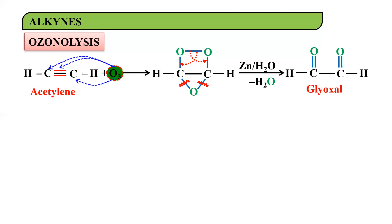So if you do ozonolysis of an alkene you get aldehydes, ketones, or a mixture — but if you do ozonolysis of an alkyne, you get glyoxals.